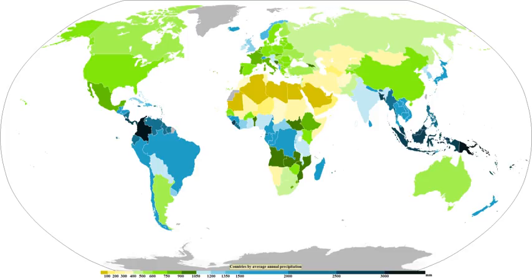Mount Waialeale has the second-highest average annual rainfall on Earth, with 12,000 mm. Storm systems affect the state with heavy rains between October and March. Local climates vary considerably on each island due to their topography, divisible into windward and leeward regions. Windward sides face the east-to-northeast trade winds and receive much more rainfall; leeward sides are drier and sunnier. In South America, the Andes mountain range blocks Pacific moisture, resulting in a desert-like climate across western Argentina. The Sierra Nevada creates the same effect in North America, forming the Great Basin and Mojave Deserts. Similarly, in Asia, the Himalaya Mountains create an obstacle to monsoons, leading to extremely high precipitation on the southern side and lower precipitation levels on the northern side.